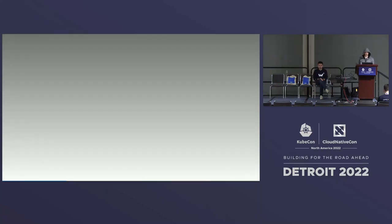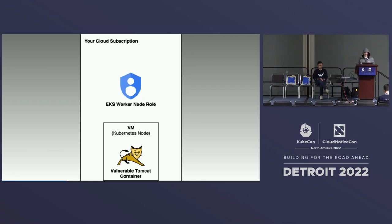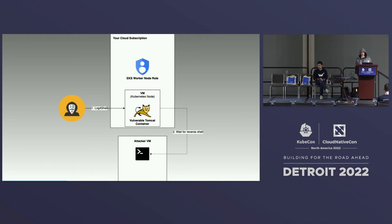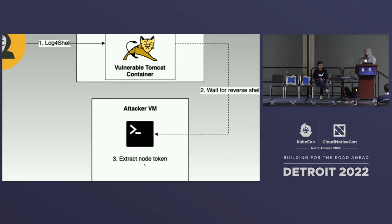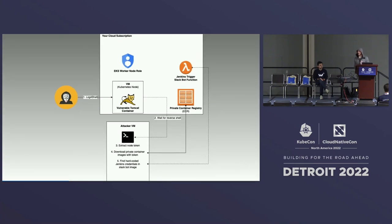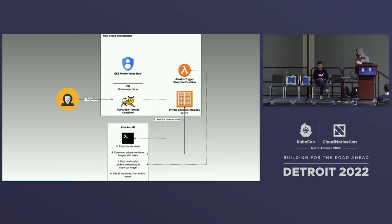Here's the attack flow: a Kubernetes node in EKS runs a vulnerable Tomcat container. An attacker uses Log4Shell to get a reverse shell, extracts the node token, and connects to the private container registry to download all images. A developer in your company had created a Jenkins-Slack integration with a serverless function that uses a Docker image on your private registry — and hard-coded Jenkins server credentials in that image, assuming it's safe since it's a private registry.